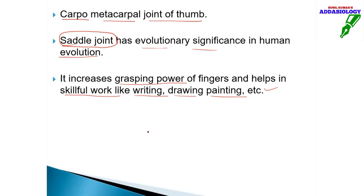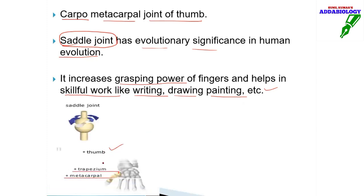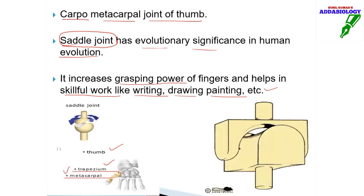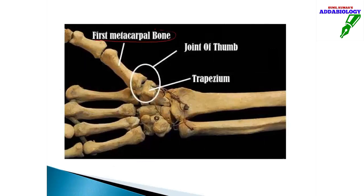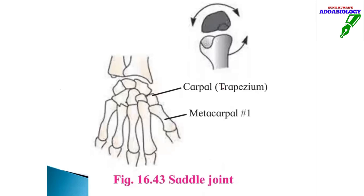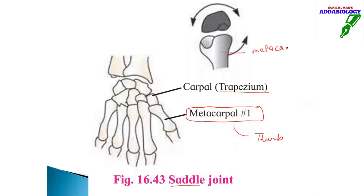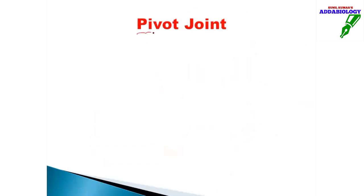The saddle joint is between the thumb (first metacarpal) and the trapezium. Looking at the diagram, one bone is placed one way and the other at 90 degrees to it — this is the saddle joint. We have the first metacarpal, the joint of the thumb, and the trapezium. Remember: saddle joint is between the first metacarpal (your thumb) and the trapezium.